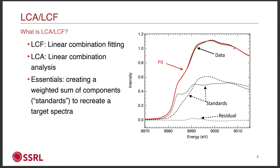Typically, this target spectrum is your data — you're trying to recreate your data using these standards. In a standard LCF plot, you have the two standards used in the fit shown as dotted lines, the fit itself as the red line, and the data being fit in the black line. Down at the bottom you have a residual, which is the difference between the data and the fit — a good way to gauge how close your fit is to your data.